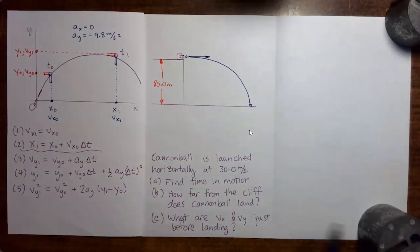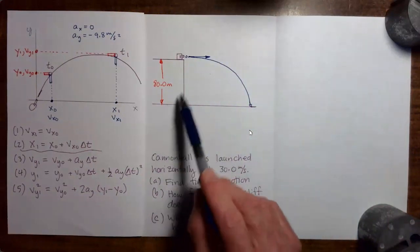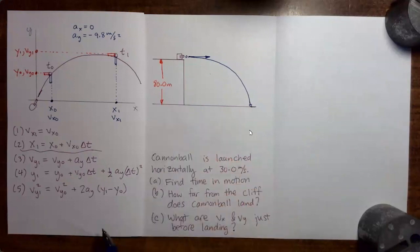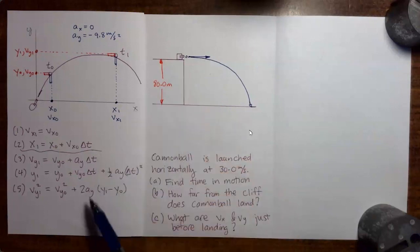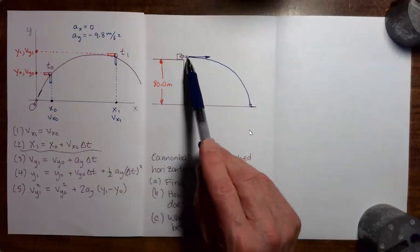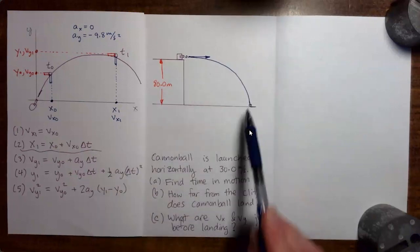So here's the example we're going to do. We have a cliff 80 meters tall, a cannonball is launched horizontally from the top of the cliff, and then traces out a trajectory and hits the ground over here.